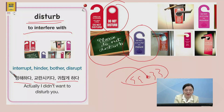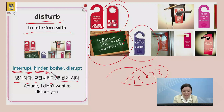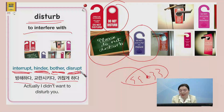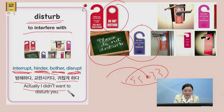So, disturb이랑 비슷한 말은 interrupt — 방해하다. Bother — 귀찮게 하다. 또는 disrupt — 또 방해하는 뜻이에요. So, it's stopping something or changing something that needs to occur in a certain way. So, you could say: 'I didn't want to disturb you.'